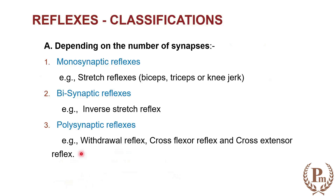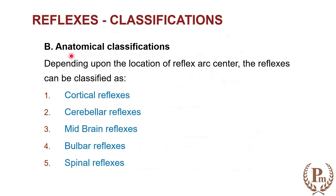Let us go for classification. There are many ways that we can classify the reflexes. Depending on the number of synapses, we can classify them as monosynaptic reflexes — examples are stretch reflexes like biceps, triceps, or knee jerk. Then comes bisynaptic or disynaptic reflexes, an example being the inverse stretch reflex. There may also be polysynaptic reflexes like withdrawal reflexes, cross flexor reflex, or cross extensor reflex.